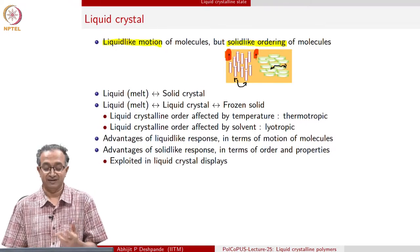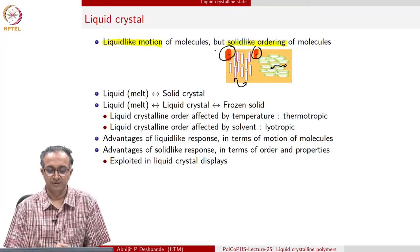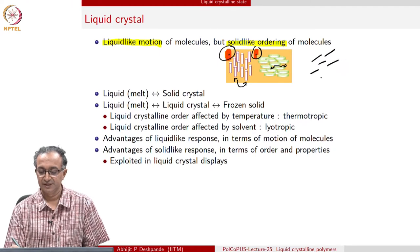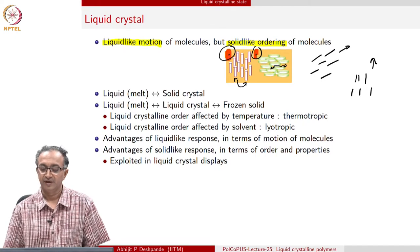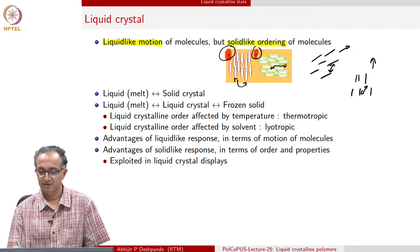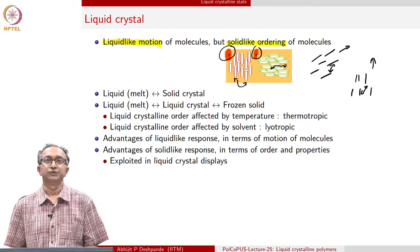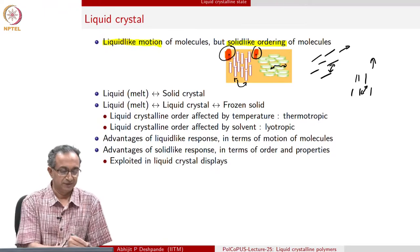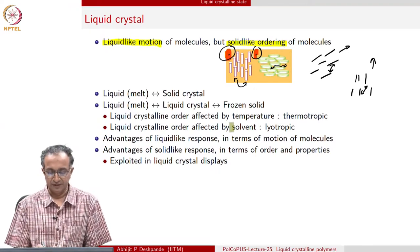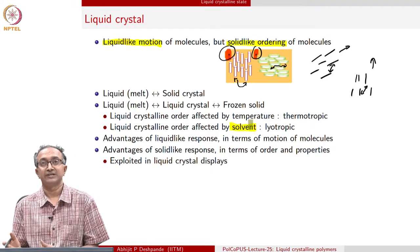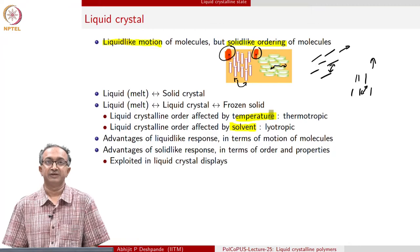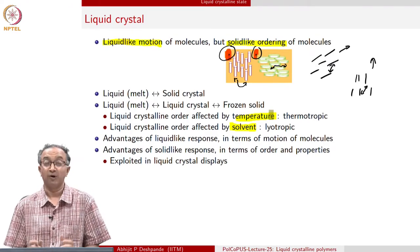In this case, the director vector, as it is called, is pointing in one particular direction. Of course, we could have a liquid crystalline order in which the direction could be different in one place and different in another place. And within these domains, there is exchange of molecules which is possible. You can read a bit more about these liquid crystalline materials and how there are different types depending on whether it is a solvent which leads to the formation of liquid crystalline order, or whether it is related to temperature. These are textbook-related information on liquid crystals of small molecules.